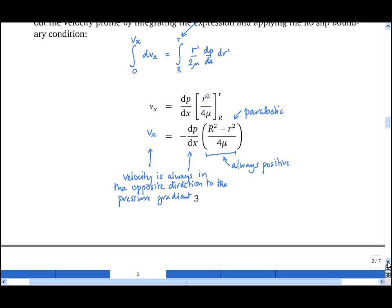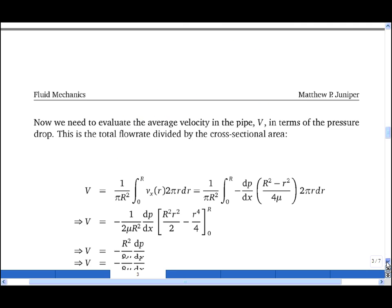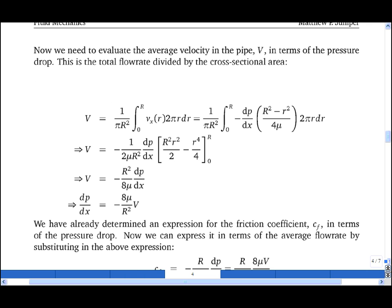So we have found an expression for the velocity as a function of r, the radial coordinate. Now we need to evaluate the average velocity in the pipe. So this average velocity is the total flow rate in the pipe divided by the cross-sectional area. And working through the algebra, one discovers a relationship between the velocity in the pipe and the axial pressure gradient.